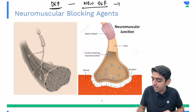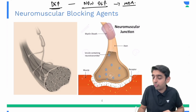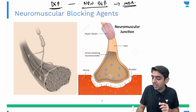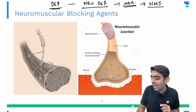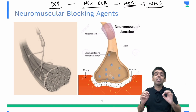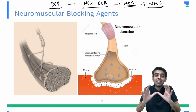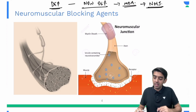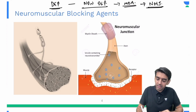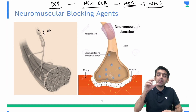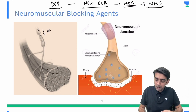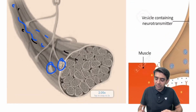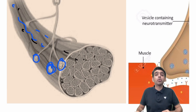First, we have to understand the mechanism of action of neuromuscular blockers. They act at the neuromuscular junction, which we call the NMJ. To understand their mechanism, you need to first understand how a normal impulse is transmitted. As you can see here, this is a nerve axon through which an impulse is being traversed, and this is our muscle fiber — together forming the motor unit.